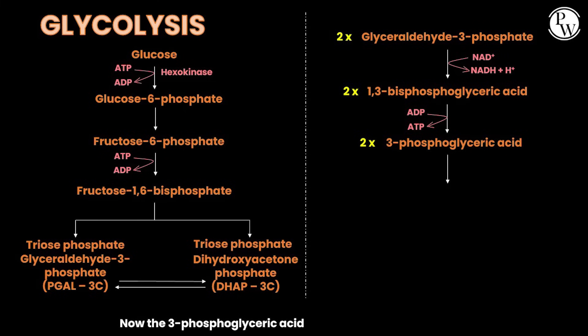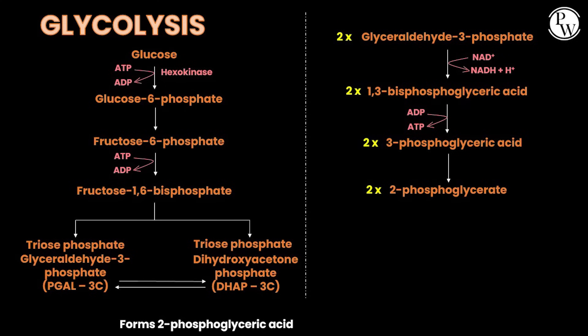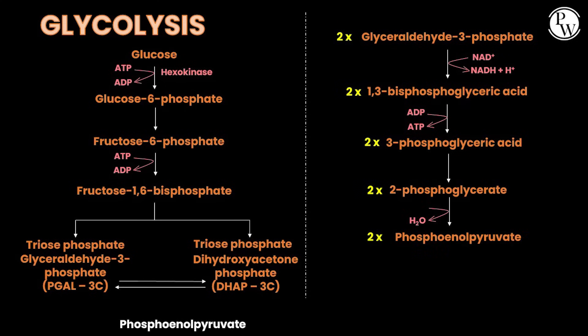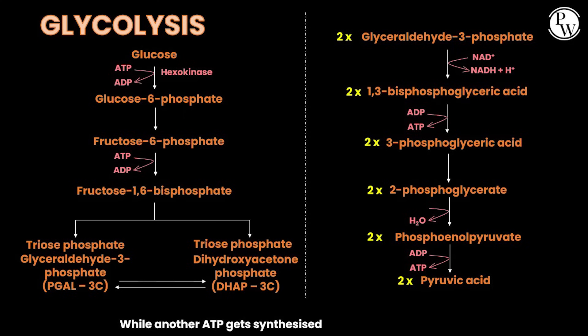In glycolysis, 3-phosphoglyceric acid forms 2-phosphoglyceric acid, which further forms phosphoenolpyruvate. Phosphoenolpyruvate then forms pyruvic acid, while another ATP gets synthesized.